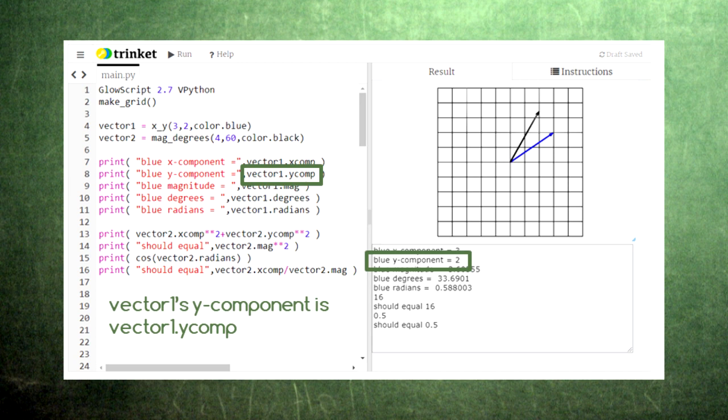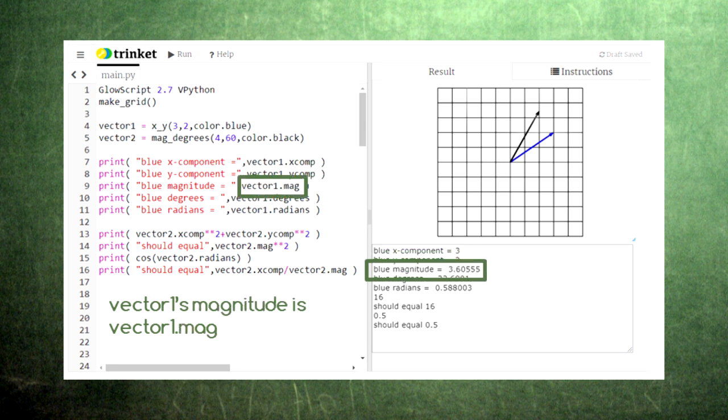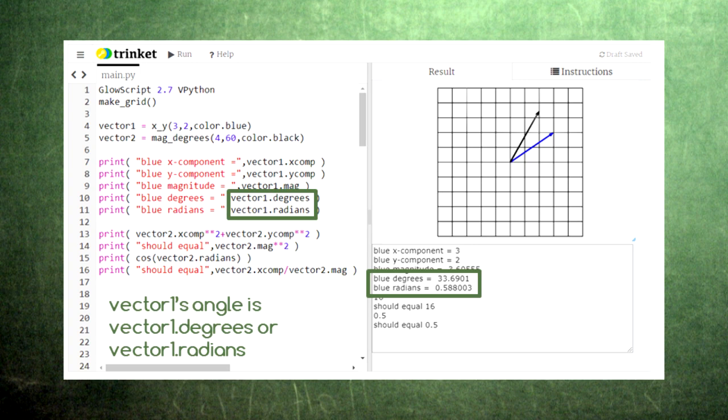Similarly, if you want vector1's y component, you type vector1.ycomp. You can also access the vector's magnitude with the mag attribute and its angle with the degrees or the radians attribute, depending on which set of units you need.